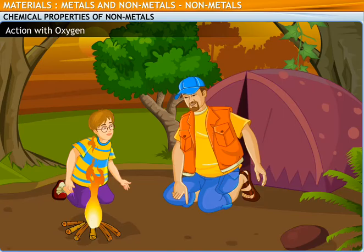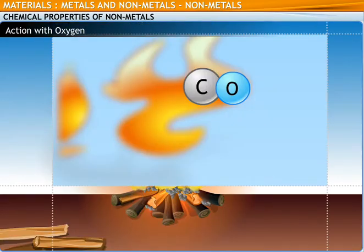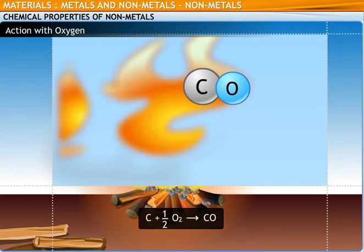Observe the bonfire. In this bonfire, if there is a partial combustion, carbon monoxide is produced. This is a neutral oxide. Nitric oxide is another example of a neutral oxide.